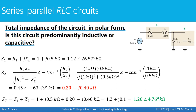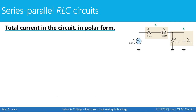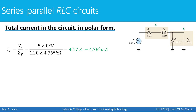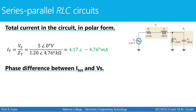With Z1 and Z2 written in both rectangular and polar forms, we combine them to get the total impedance. We take each rectangular form, add like terms, and convert to polar. The total impedance for the circuit is 1.2 kilohms at an angle of 4.76 degrees. We find the total current by dividing the source voltage by total impedance. The phase difference between total current and source is negative 4.76 degrees — the total current lags the voltage source by 4.76 degrees.